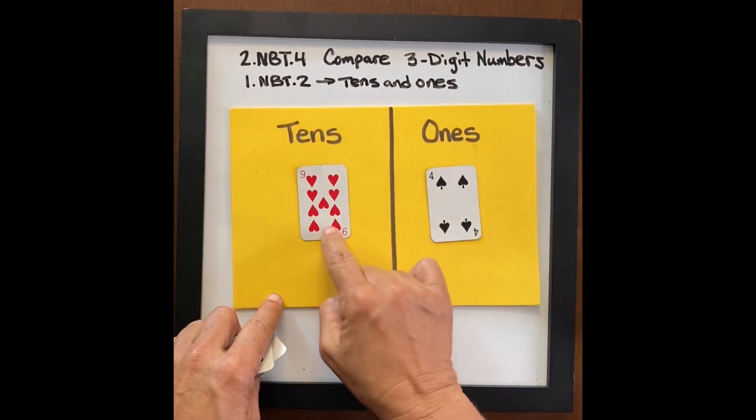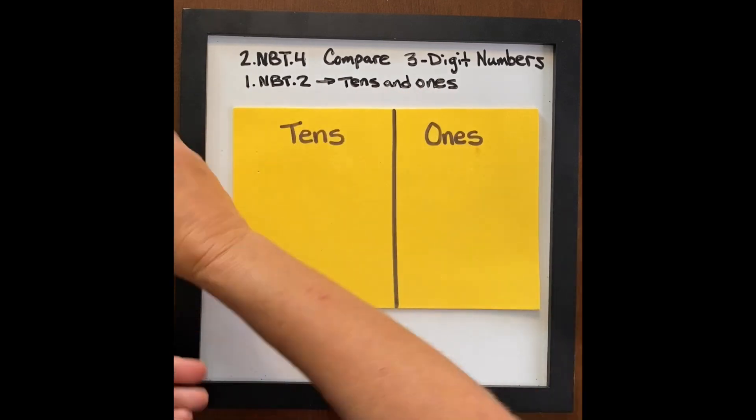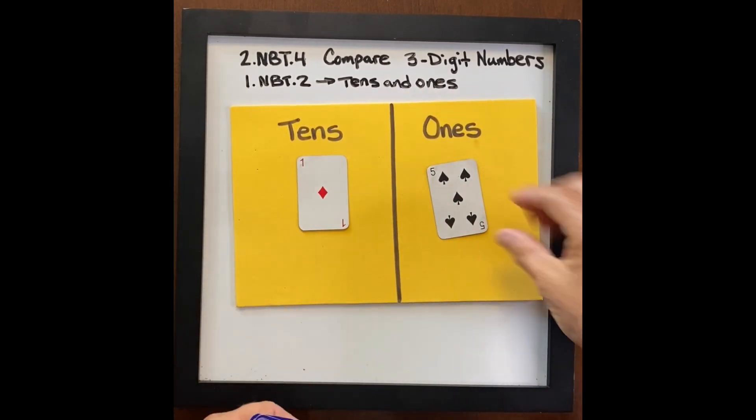Nine ten four. Nine ten four is ninety four. One ten five, fifteen.